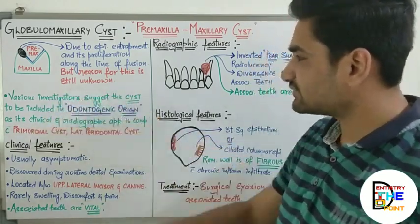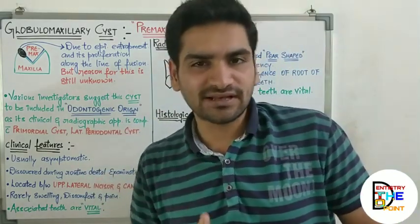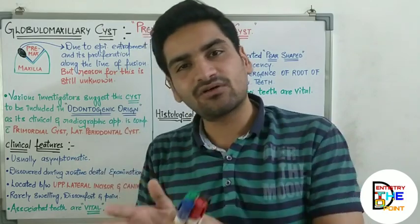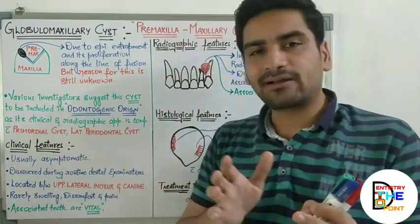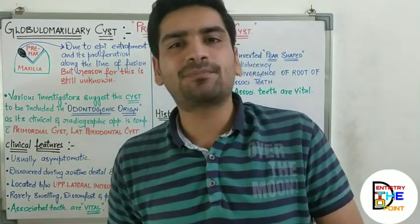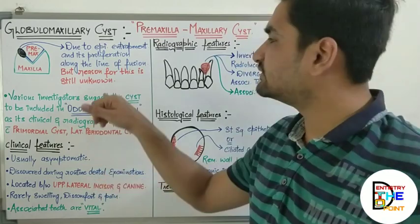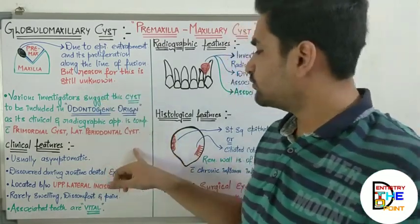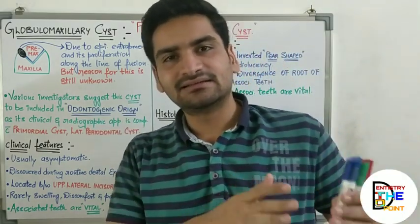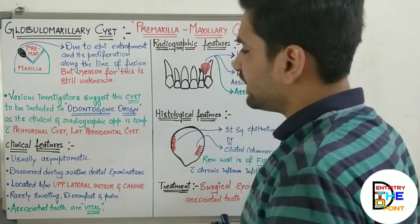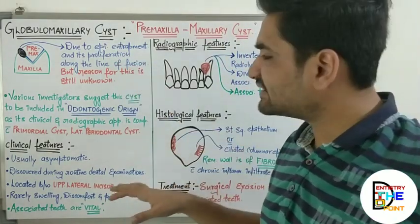Various investigators have suggested that this cyst should be included in the odontogenic origin, because the clinical and radiographic features are almost similar and comparable to lateral periodontal cyst or primordial cyst. Additionally, there is no exact reason for entrapment of epithelium, so most investigators have suggested including this as a cyst of odontogenic origin.